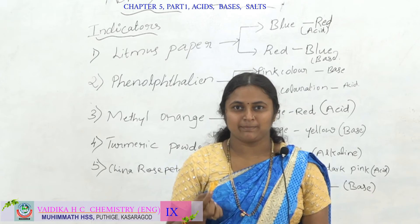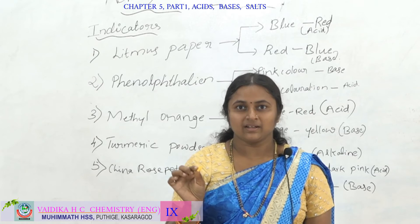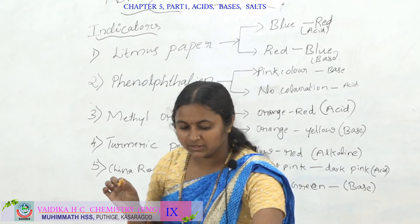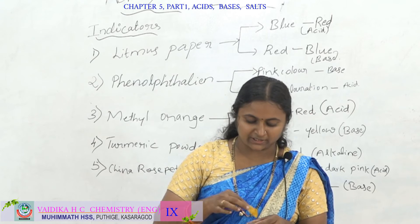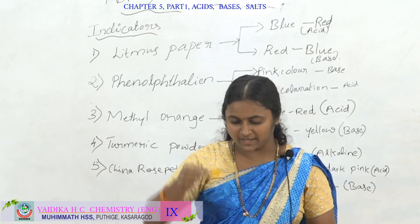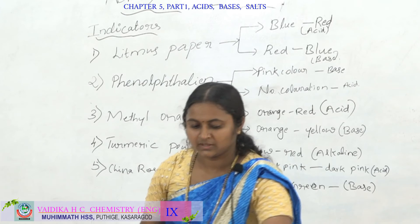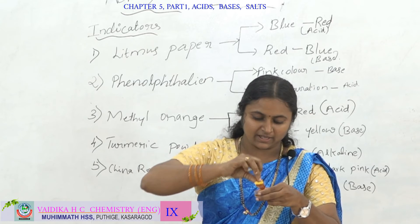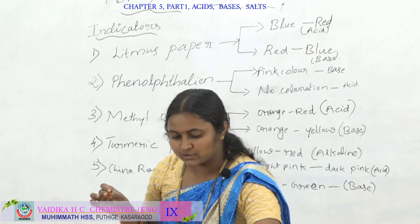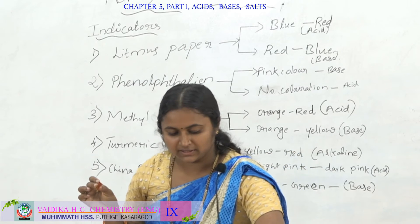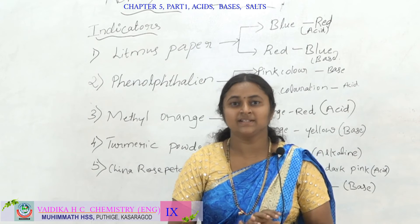Another indicator is turmeric paper. It is made by taking filter paper and dipping it in turmeric powder. Let us check its color in acid and base. In acid, there is no color change — it remains yellow. In base, the color changes: the yellow color converts to red. However, by using turmeric paper we cannot identify acid, because in acid it stays yellow. Only in base does the color change.